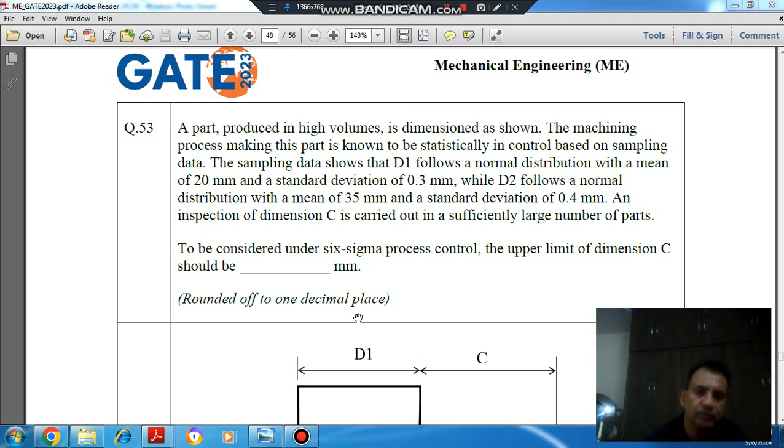A part produced in high volume is dimensioned as shown. The machining process making this part is known to be statistically in control based on sampling data. The sampling data shows that D1 follows a normal distribution with a mean of 20 mm and a standard deviation of 0.3 mm, while D2 follows a normal distribution with a mean of 35 mm and a standard deviation of 0.4 mm.